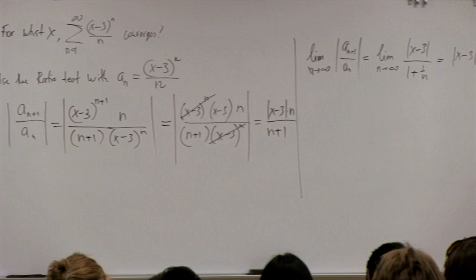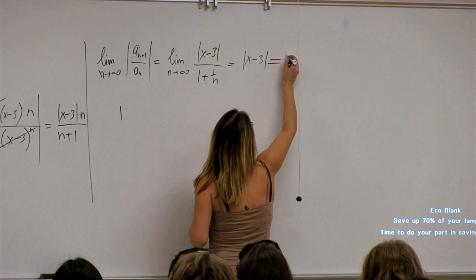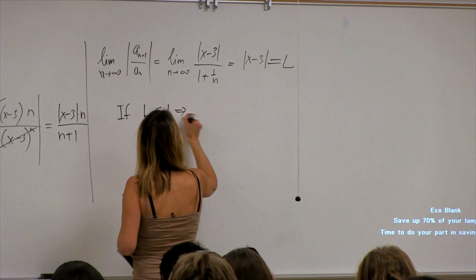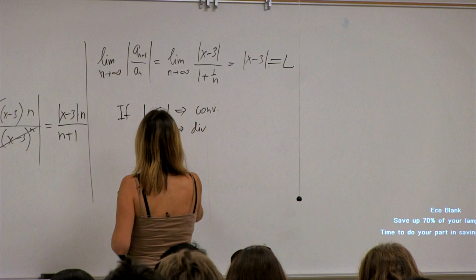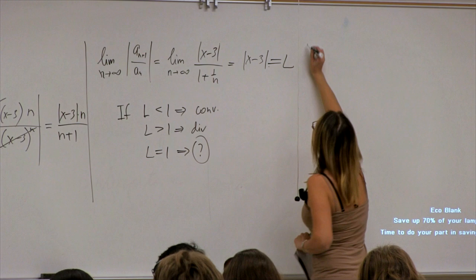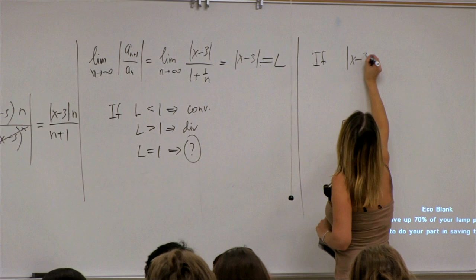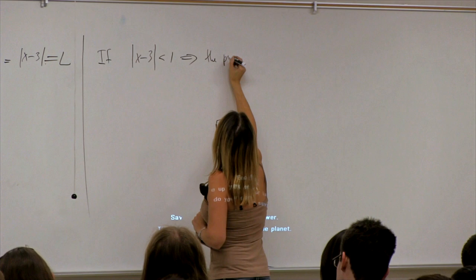We call this limit L. If L is less than 1 we have convergence, if L greater than 1 we have divergence, and if L equals 1 we don't know. If |x−3| is less than 1, the power series converges.